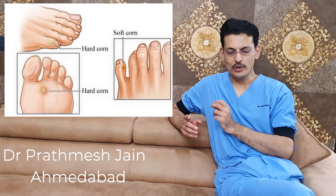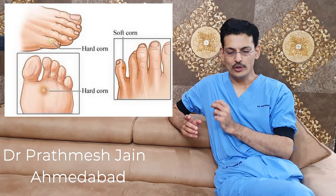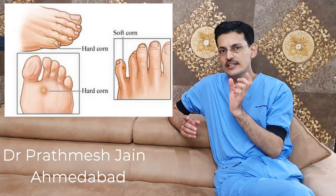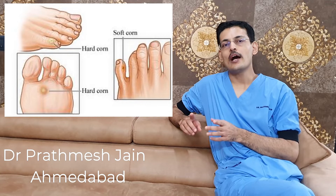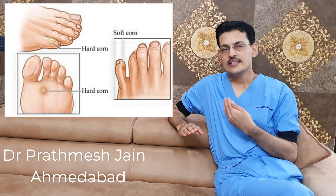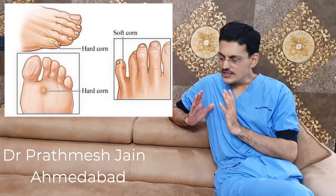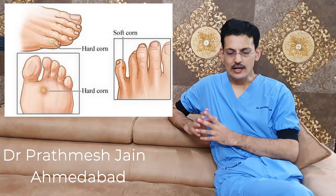A soft corn is also called heloma molle. It is more painful and more commonly seen in the interdigital area. It is relatively softer and is due to absorption of moisture from sweat and maceration. These corns are more susceptible to fungal and bacterial infection, so they can be secondarily infected and more painful. They are most commonly seen in the fourth digital web space and are also called kissing corns.